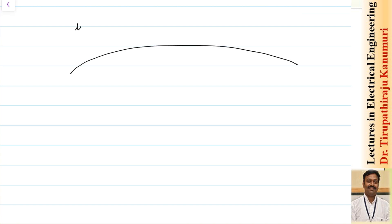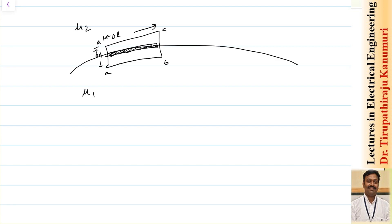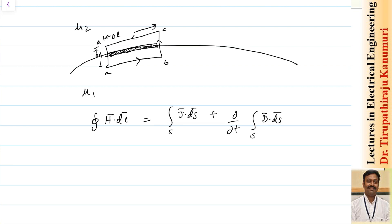Now let us see the magnetic boundary conditions. For the tangential component, the second medium has permeability mu 2 and the first medium mu 1. I take the line integral around a loop with points a, b, c, d, differential length delta l and height delta h. The relation used is the closed integral of H dot dl equals the surface integral of J dot ds plus the partial derivative with respect to time of the surface integral of D dot ds.